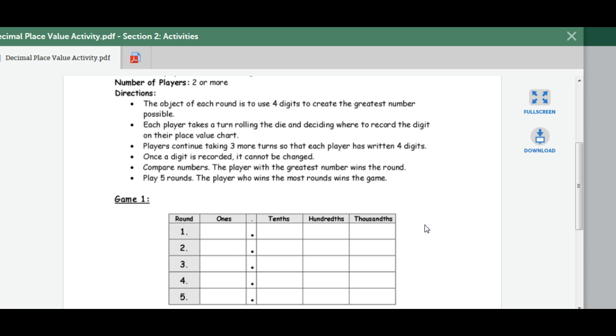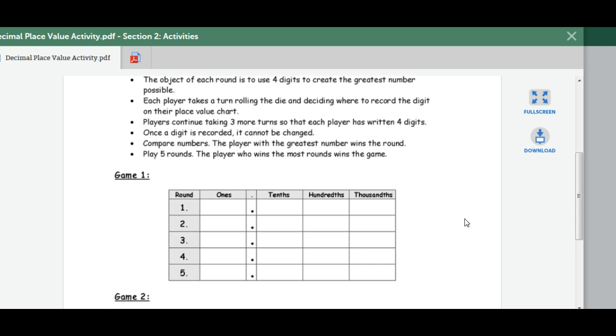They record their numbers as they go, and as they roll, the students can determine which number they want to put where. So if they roll one first and they want to put it in the thousands, they can. The students are also comparing their numbers from partner to partner, and the player with the greatest number wins the round.